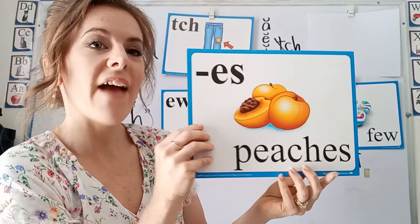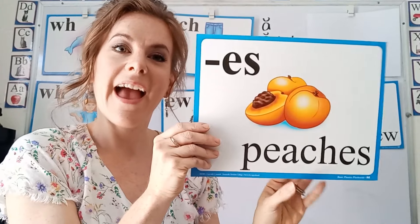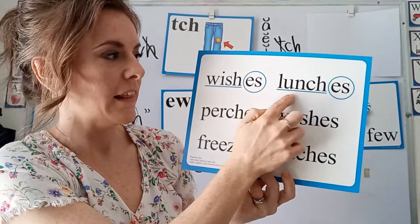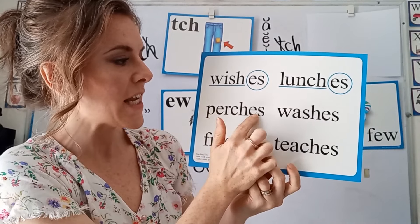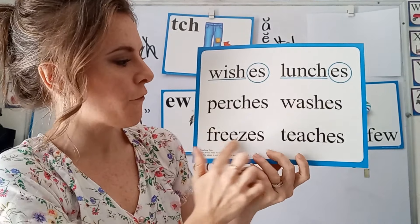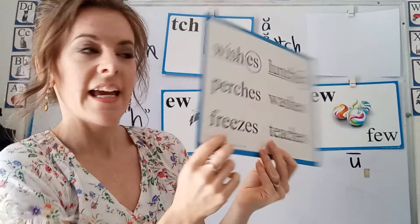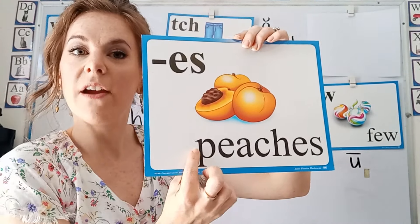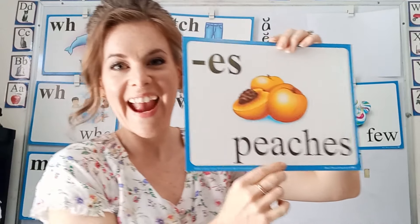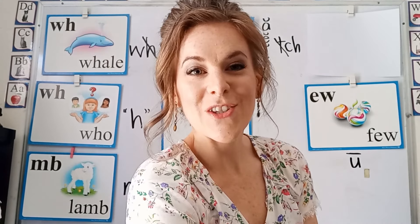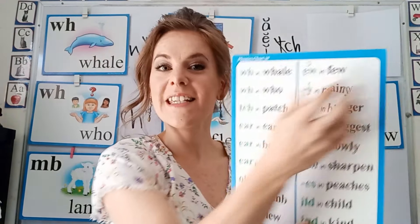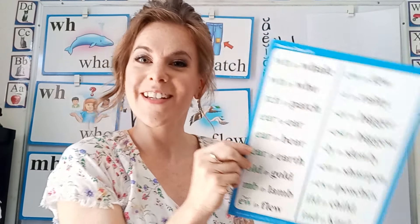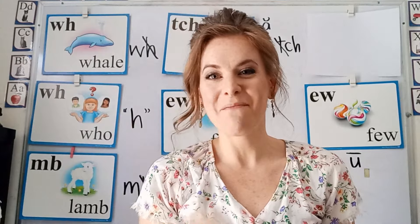And then we have the ES suffix in peaches: wishes, lunches, perches, washes, freezes, teaches. This is a suffix that comes at the end of a root word to make a new word. Very good, students — that is going to be the end of our rules for special sound chart number 10. I will see you next time. Bye.